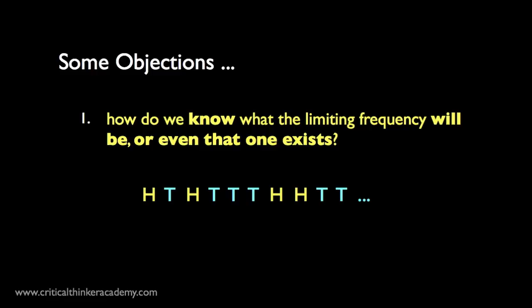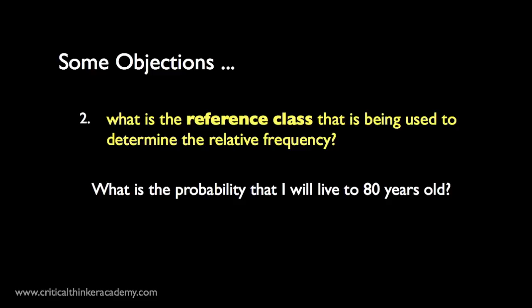Let's move on to another objection, which is sometimes called the reference class problem. This one applies both to finite and limiting frequency views. Let's say I want to know the probability that I, 43 years old at the time of making this video, will live to reach 80 years old. One way to approach this is to use historical data to see what proportion of people who were alive at 43 also survived to 80. The question is, how do we select this group of people from which to measure the proportion?